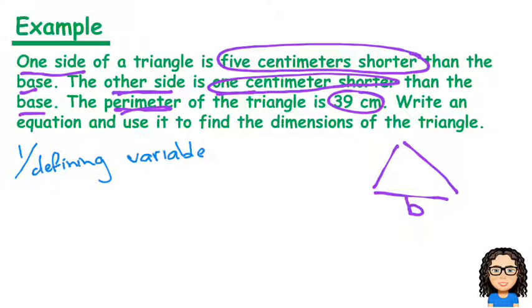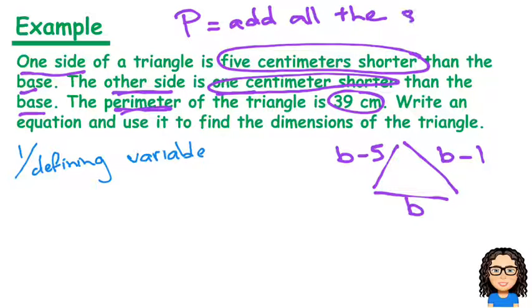One side of the triangle is 5cm shorter—shorter meaning subtract. The other side is 1cm shorter, so again subtract. Perimeter means I need to add all the sides together.